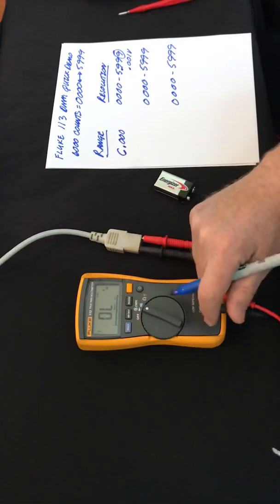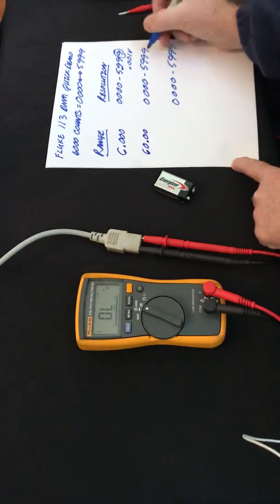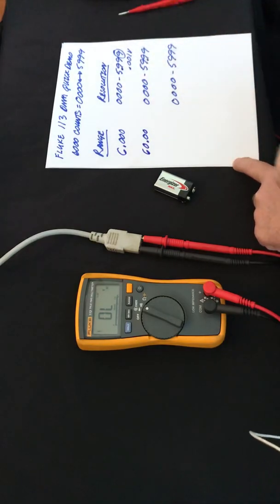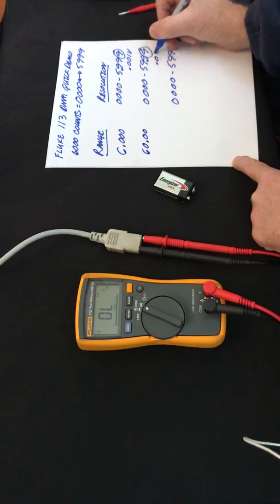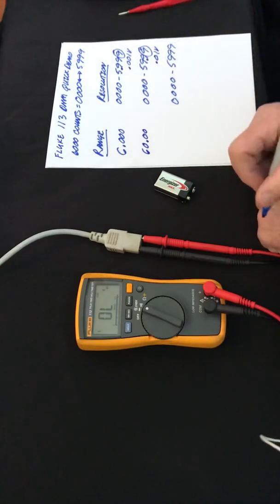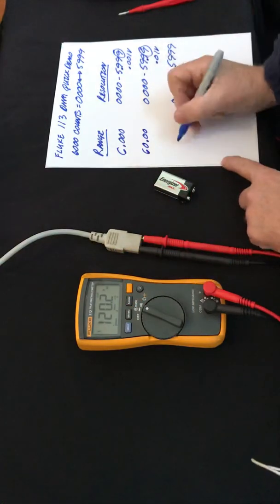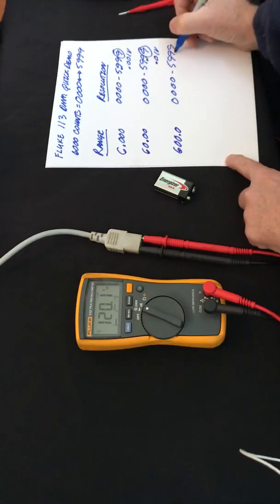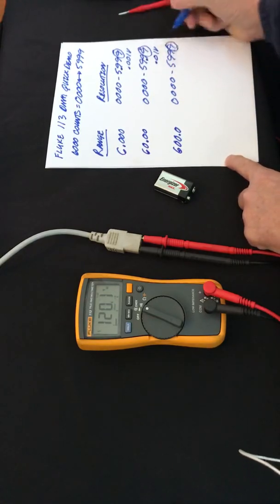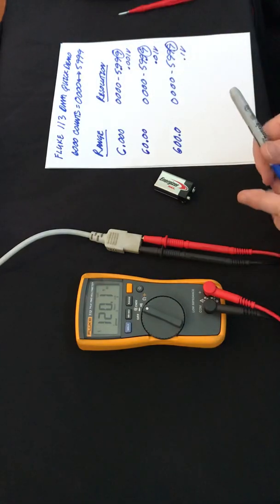If I hit the range key again I go into the 60 volt range which moves my decimal point to there and now I have 0.01 volts worth of resolution at 60 volts. If I press the button again I'm now in the 600 volt range and that gives me the decimal point here with 0.1 volt worth of resolution. So you still have quite a bit of resolution in this multimeter.